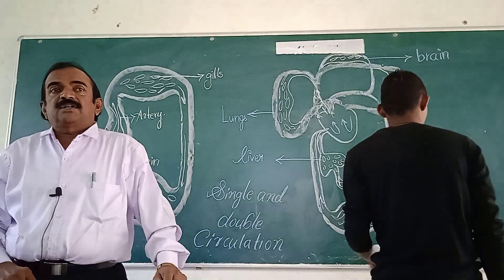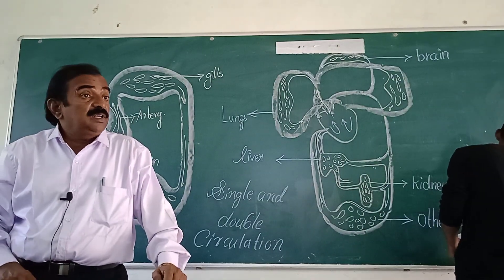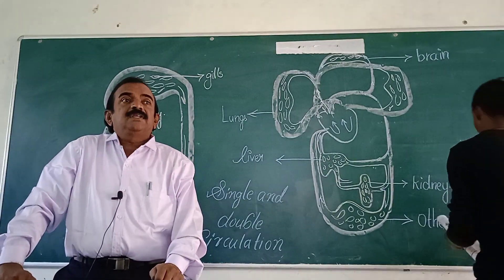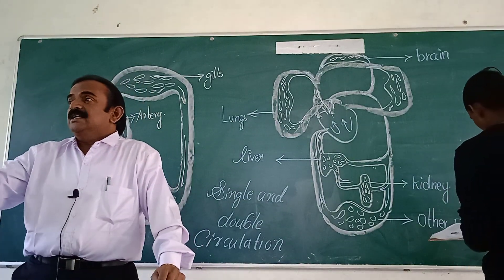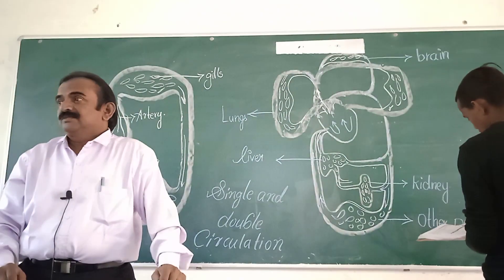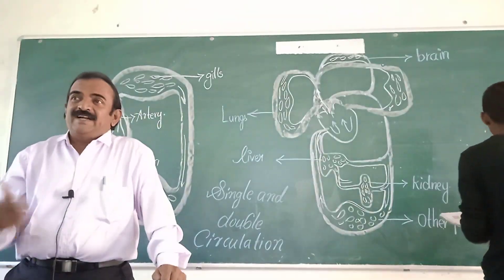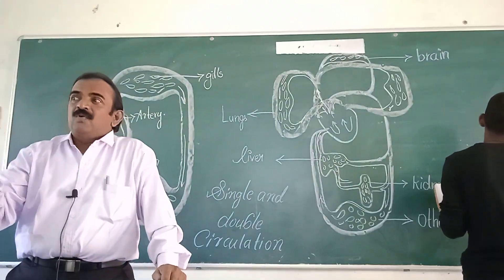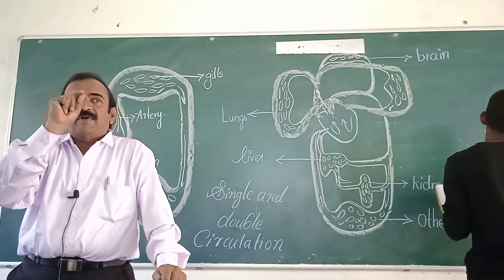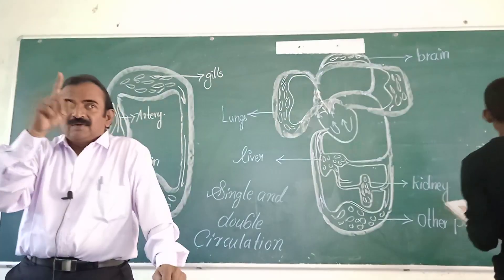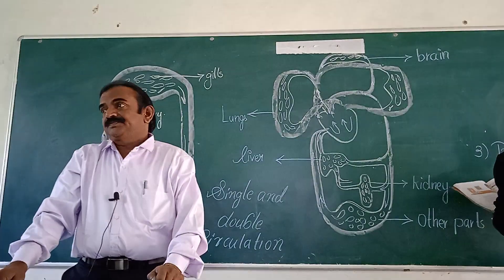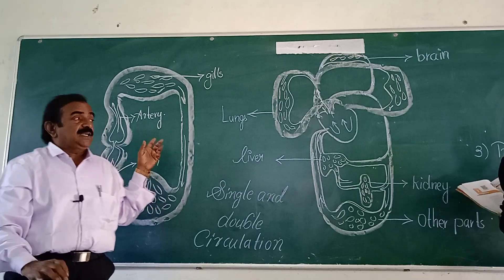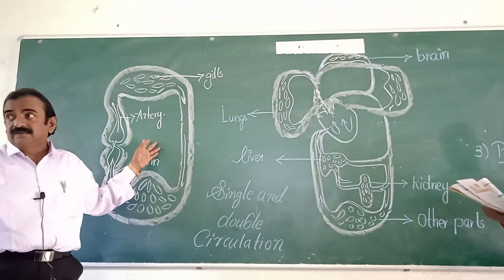Single circuit circulation and double circuit circulation. You know what is circulation. In chemistry, in physical science, you are learning circuit — electric circuit. So what is an electric circuit? Electricity is passing through a wire, a copper wire. There is a movement of electrons. So here you are seeing single circuit circulation on page 59.